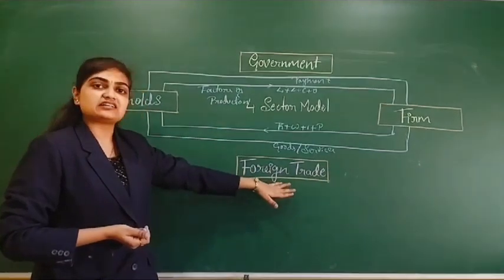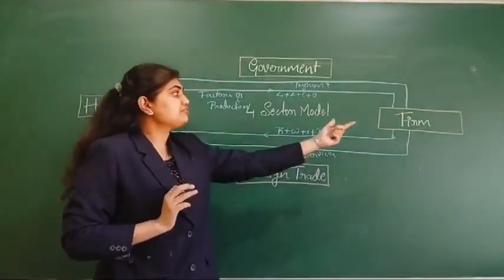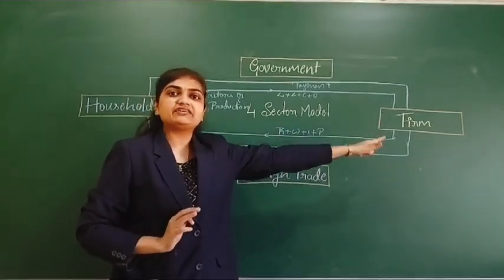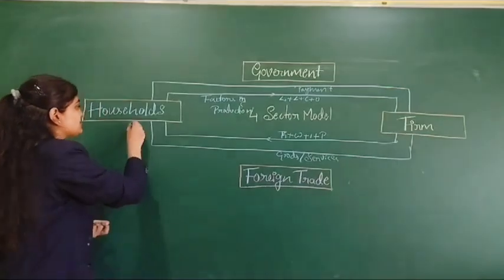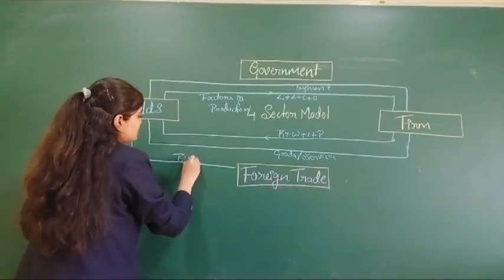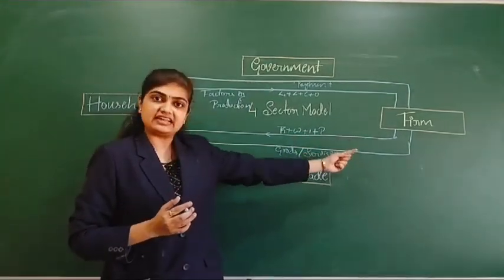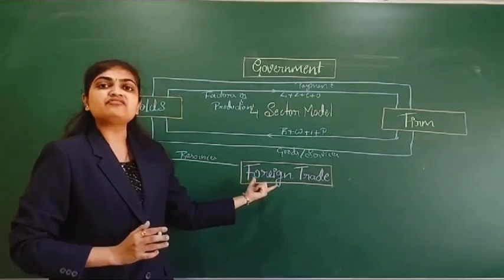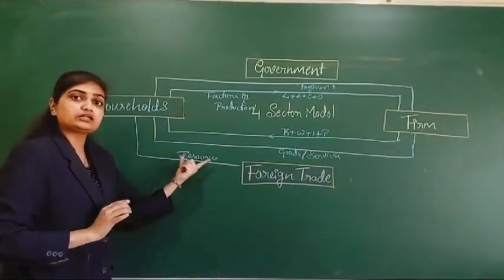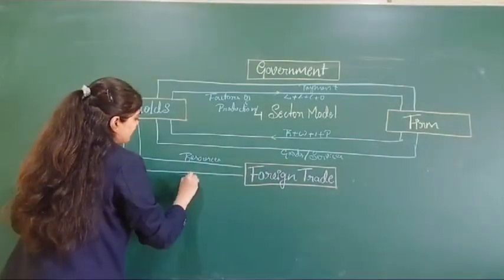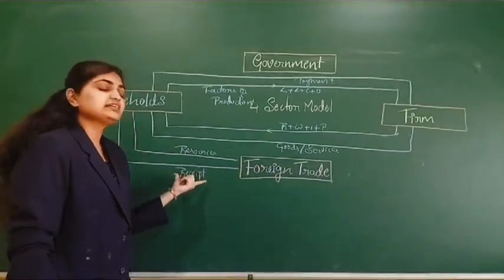Now we will come to the third sector — foreign trade. Individuals are supplying factors of production to the firm. For example, in India, after supplying land to Indian businesses, if there is excess land, it is supplied to foreign countries as resources. Similarly, some employees are already working in India, but additional human resources are working at foreign companies. So here we are sending labor to foreign countries, and in return we get payment. Households give land, labor, capital, or organization to foreign countries and in return get payment.